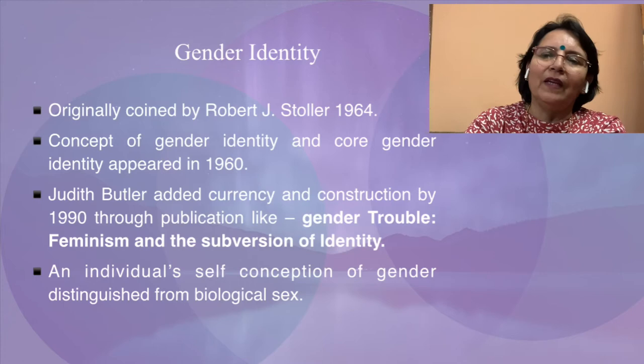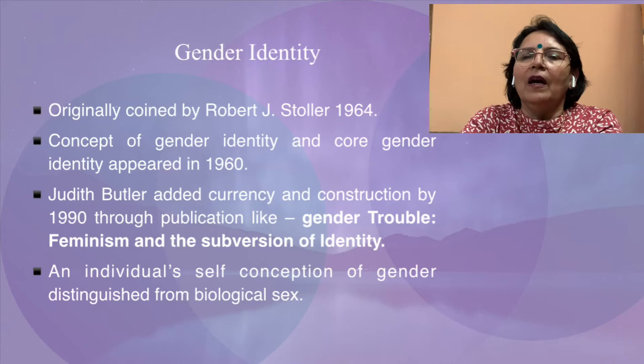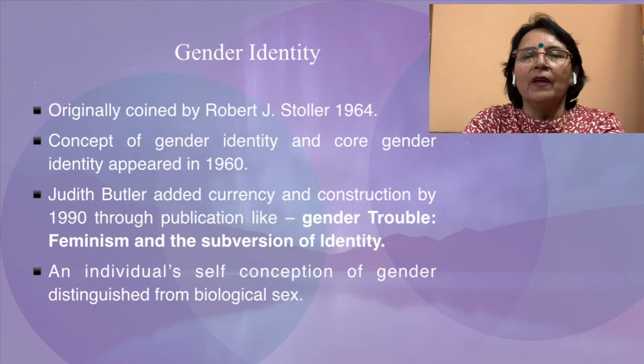Let me tell you what exactly is core identity. Core identity according to Robert J. Stoller is the individual self-evident conviction that the sex that he or she is ascribed to is correct — in an anatomical and psychological sense. This according to Stoller is the first step to ultimate gender identity.